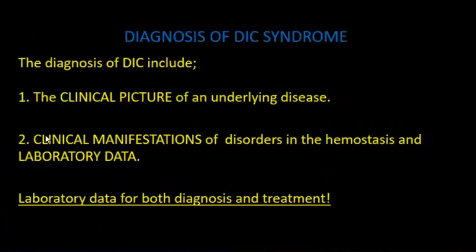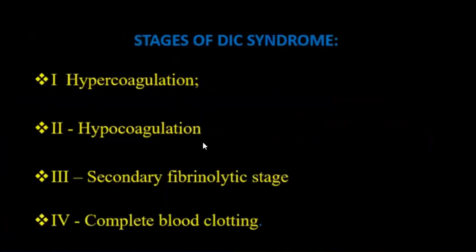Diagnosis of DIC includes the clinical picture, underlying diseases, clinical manifestation of disorders in hemostasis, and laboratory data for both diagnosis and treatment. Stages of DIC: first — hypercoagulation; second — hypocoagulation; third — secondary fibrinolytic stage; fourth — complete blood clotting failure.